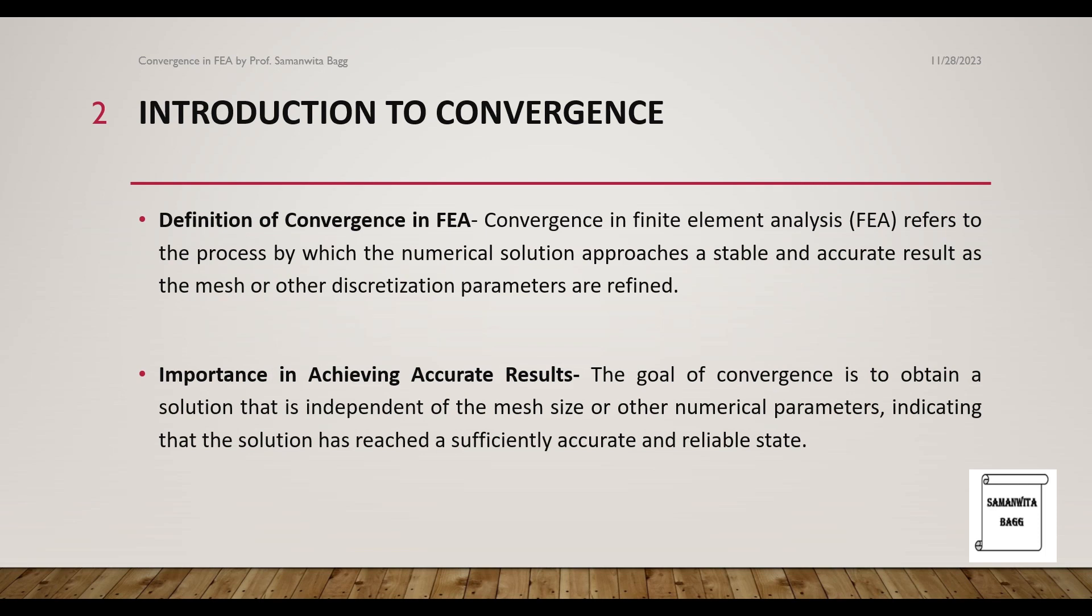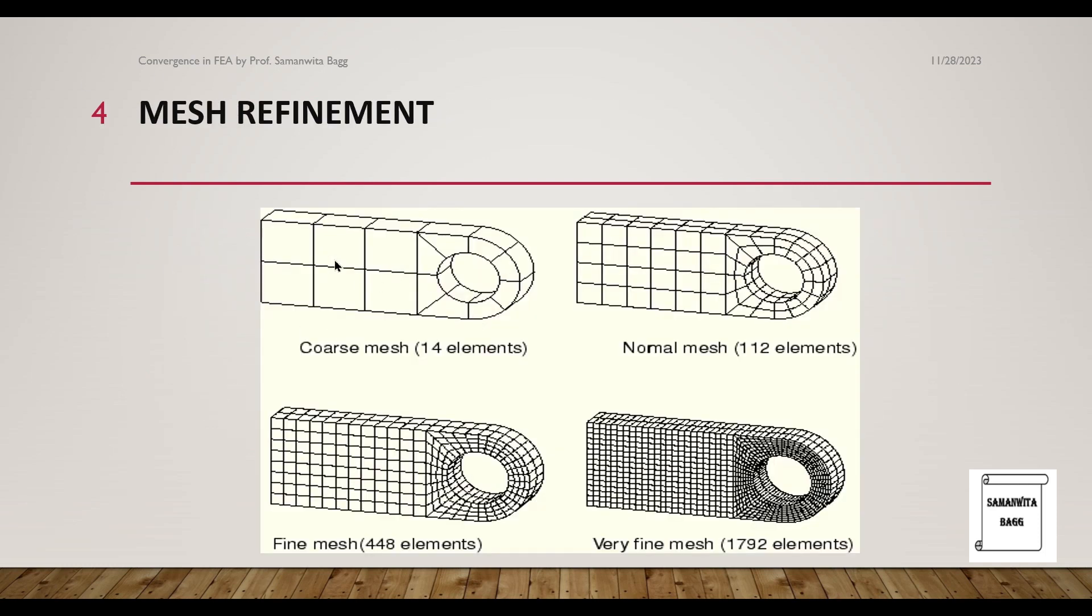What is coarse mesh? It's where you have the size of the mesh as quite large. You can see that there are only 40 elements here. When you go for a normal type of mesh, you increase the number of elements to 112. You see the mesh size has reduced.